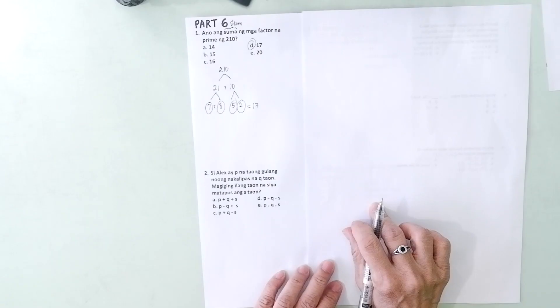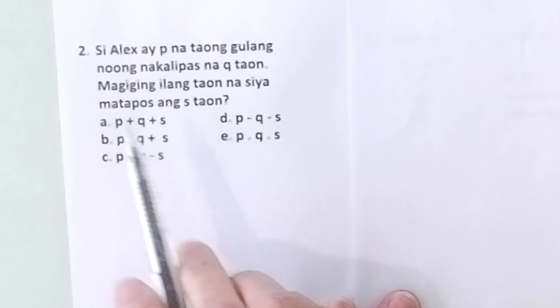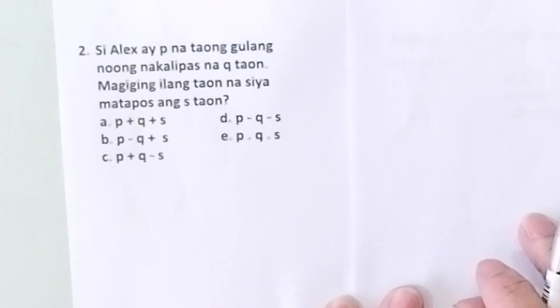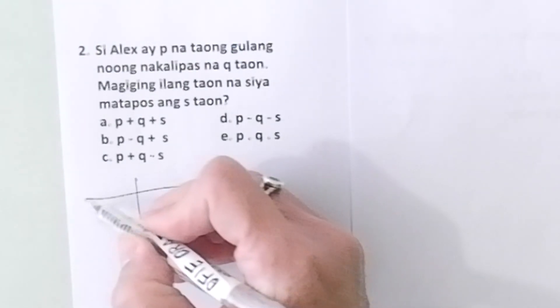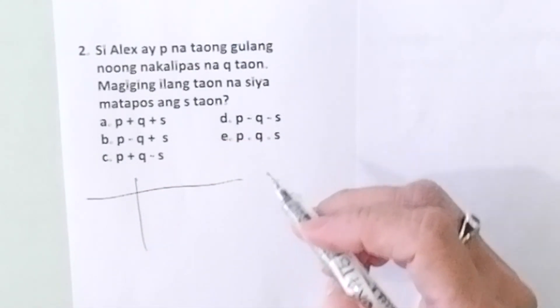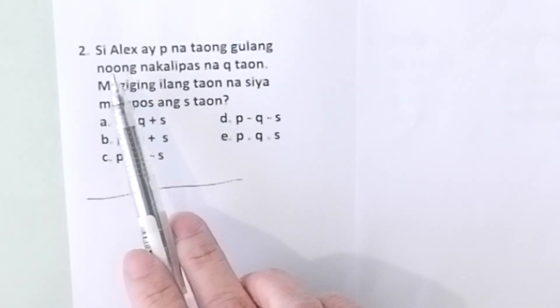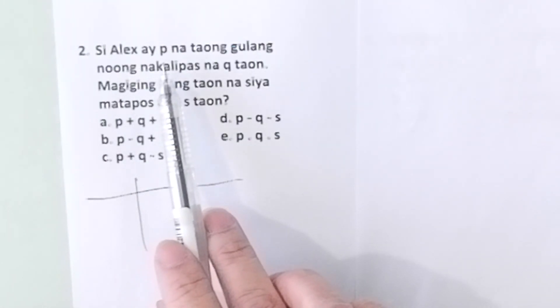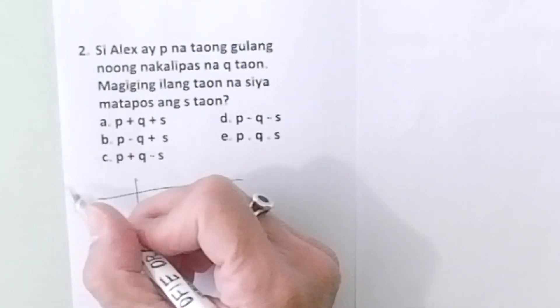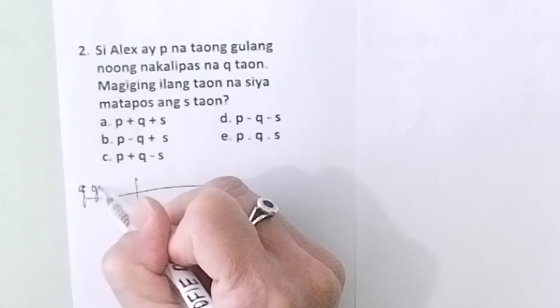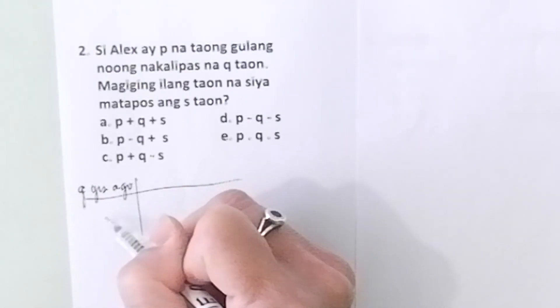Problem number two: Si Alex ay P na taong gulang noong nakalipas na Q taon. In English, Alex is P years old Q years ago. So we have here Q years ago, Alex was P.